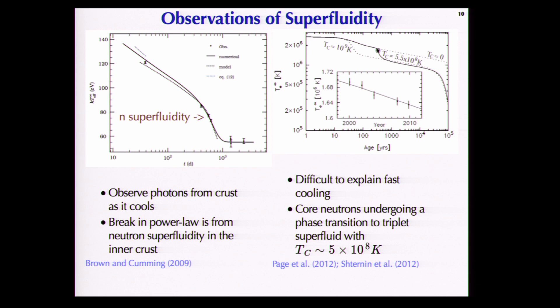Another example of superfluidity's importance is the observation of the neutron star inside Cas A. This is also a cooling curve — the neutron star isn't accreting, it's just sitting there cooling as a function of time — and what we observe is that this neutron star is cooling very fast. This fast cooling can only occur because the neutrons inside are going through a phase transition: their temperature is dropping below the critical temperature, forming all these Cooper pairs. There is an exotic neutrino cooling process that creates this very fast cooling, and the observations tell you the size of this gap through this critical temperature.